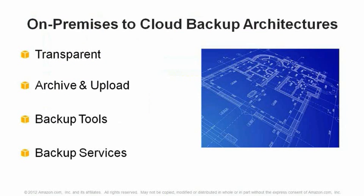Let's take a look at different ways to do backup. For on-premises to cloud backup architectures, I reviewed a number of approaches and identified both open source and commercial tools. The four main architectures are: the transparent model, the archive and upload model, the backup tools model, and several backup as a service models as well.